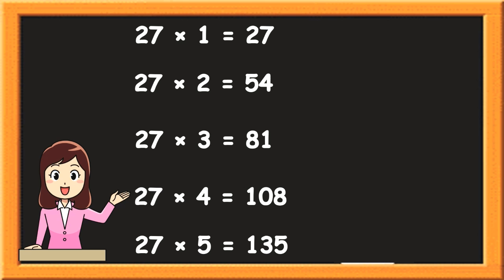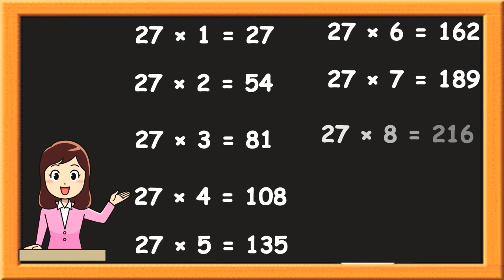27 6s are 162. 27 7s are 189. 27 8s are 216. 27 9s are 243. 27 10s are 270.